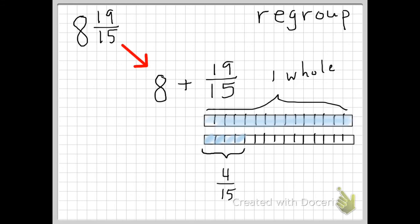So essentially that's why this works. We have 19 fifteenths is equivalent in mixed number form to 1 and 4 fifteenths. Now all that is left to do is to put that back together with our original whole number which was 8. So we have 8 plus 1 and 4 fifteenths equals 9 and 4 fifteenths which is my final answer.